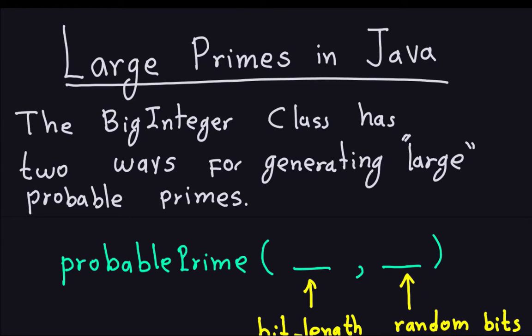Hello and welcome again. It is time we talk about how to generate large primes in Java. If you remember the sequence of videos about the RSA or how to produce large primes, there was an algorithm to check whether a number is a prime or not — the Miller-Rabin algorithm. Now in Java there are a couple of things you can do to generate large primes, and all of them have to do with the BigInteger class.